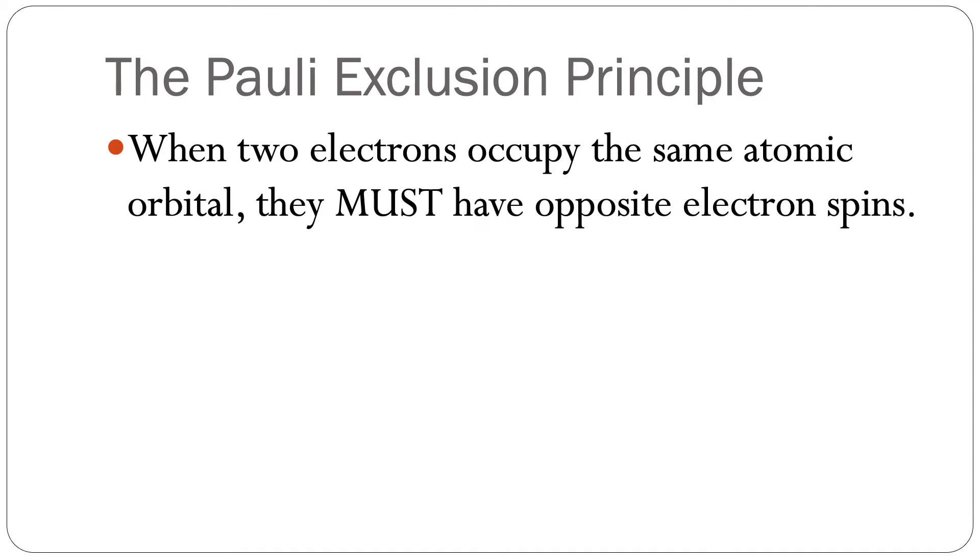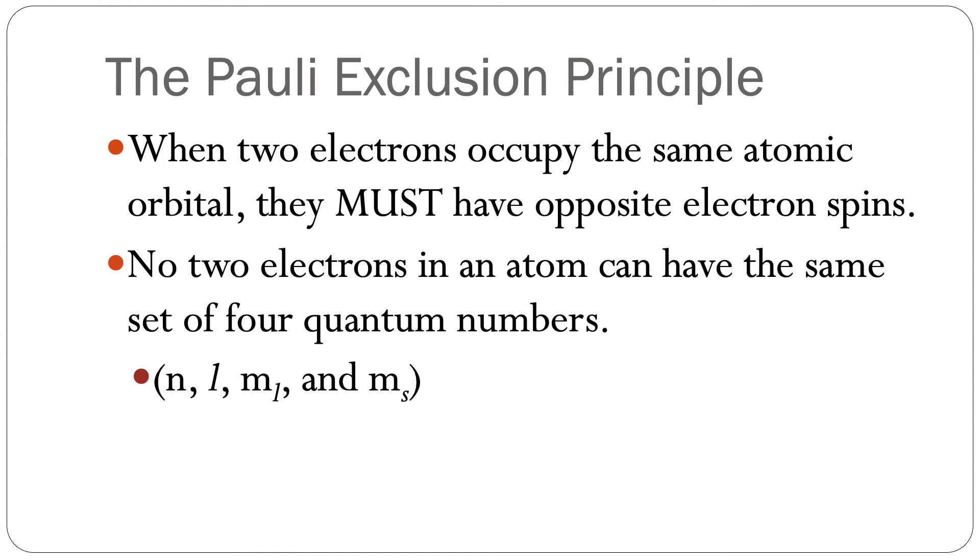First, when two electrons occupy the same atomic orbital, they must have opposite electron spins. And second, no two electrons in an atom can have the same set of four quantum numbers.